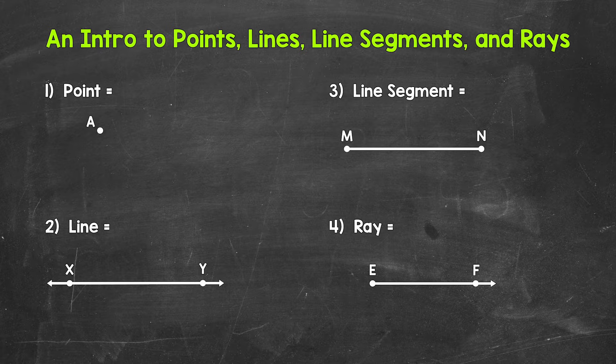We use a dot to represent a point and a capital letter to name a point. For example, we have point A. When it comes to points, they don't have any size.